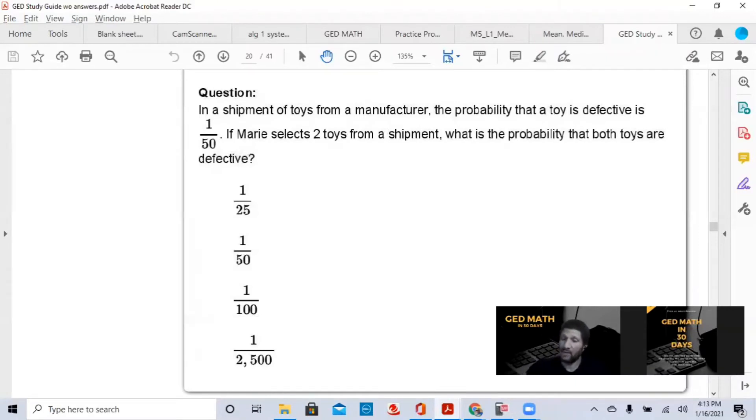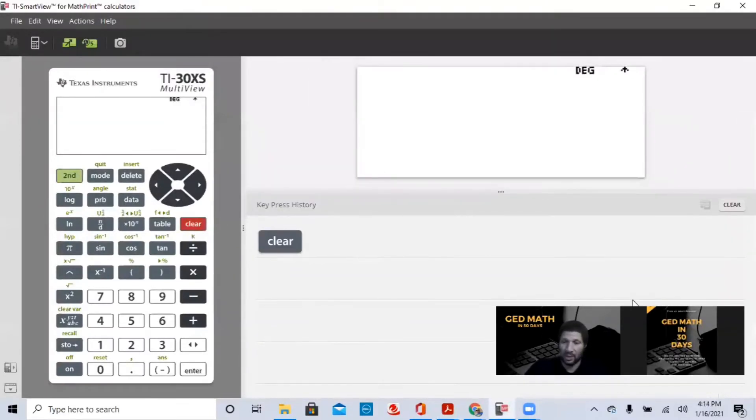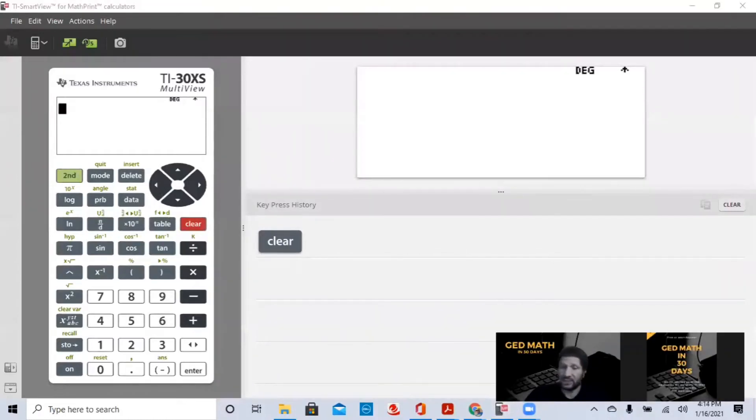In this case, we actually have to use what's called compound probability. That's the probability of more than one event happening. All you have to do is, depending upon the number of events, you just multiply. You find the simple probability of each event, and then you multiply them together. In this example, the chance of selecting the first toy that was defective is 1 out of 50. The probability of a defective toy is 1 out of 50. What is the probability of picking the second toy? That's the same thing. So the probability that the second toy is defective is also 1 out of 50. Compound probability is just multiplying the probability of each event. So all we want to do is 1/50 times 1 over 50.